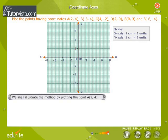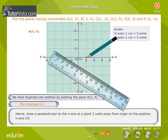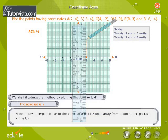We shall illustrate the method by plotting point A(2, 4). The abscissa is 2. Hence, draw a perpendicular to the X-axis at a point 2 units away from origin O, on the positive X-axis OX.